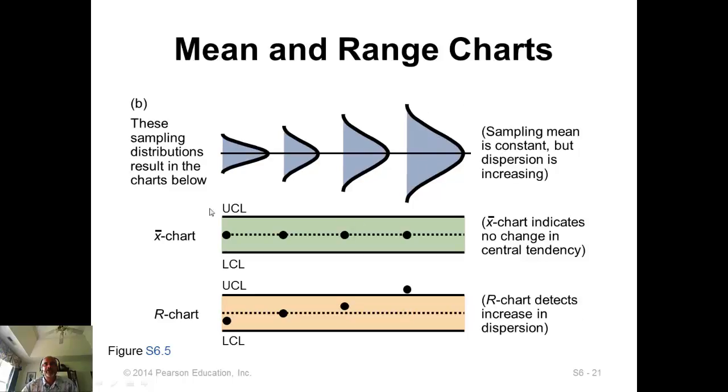If you have a situation like this, where the target value seems to be okay, so the X-bar chart seems alright, but then slowly the range is increasing. The range is going out of control.